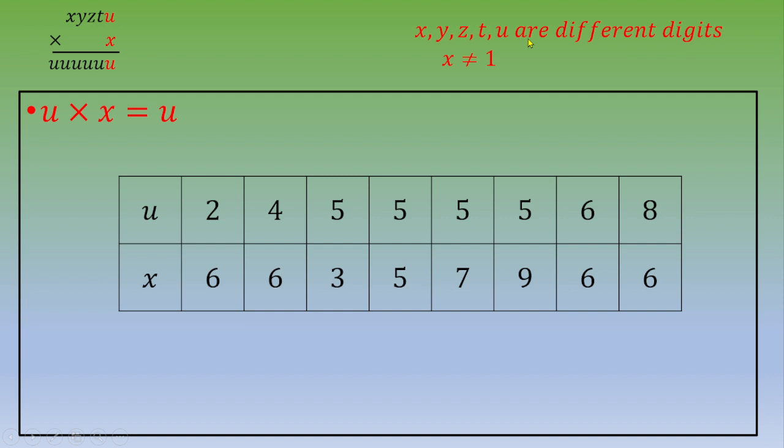So u and x could not be the same. And we've got 5 and 5 and 6 and 6. So we can cancel out these two columns. So we end up with this table.